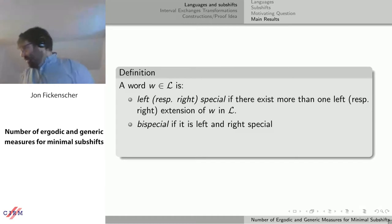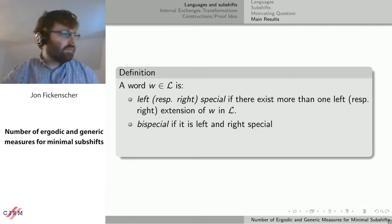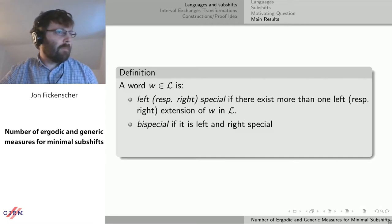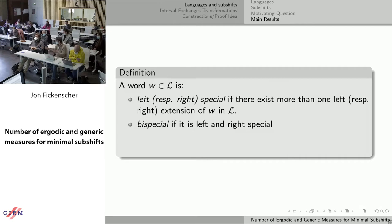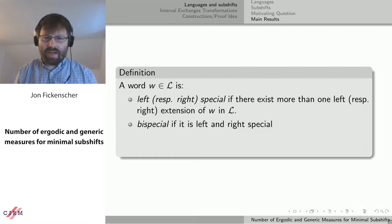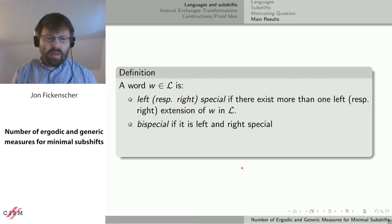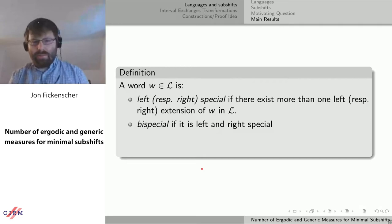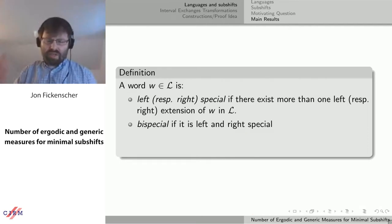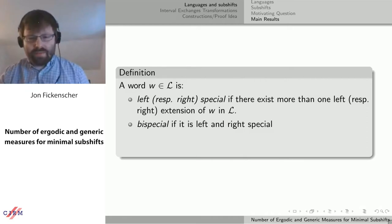There's a question in the chat: Roni doesn't find this paper by Cassaigne. It's in the Lothaire book. The speaker clarifies it was actually proved in a continuation of Cassaigne's paper about special factors, and apologizes for the misattribution. So: a word is left or right special if you can extend it more than one way. It's bispecial if you can extend it more than one way on both the left and the right. A word is regular bispecial if exactly one left extension is right special, and exactly one right extension is left special. Regular bispecial can be thought of as one way to extend weak/ordinary/strong bispecial notions to a larger alphabet.